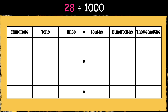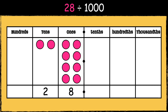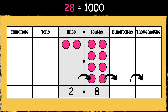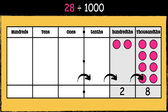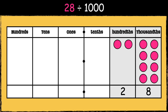Now let's look at two-digit numbers divided by a thousand. Twenty-eight divided by a thousand — both digits need to move three places to the right, so twenty-eight becomes two hundredths and eight thousandths. We need to use zeros as placeholders to show that there are no ones and no tenths, so the answer is zero point zero two eight.